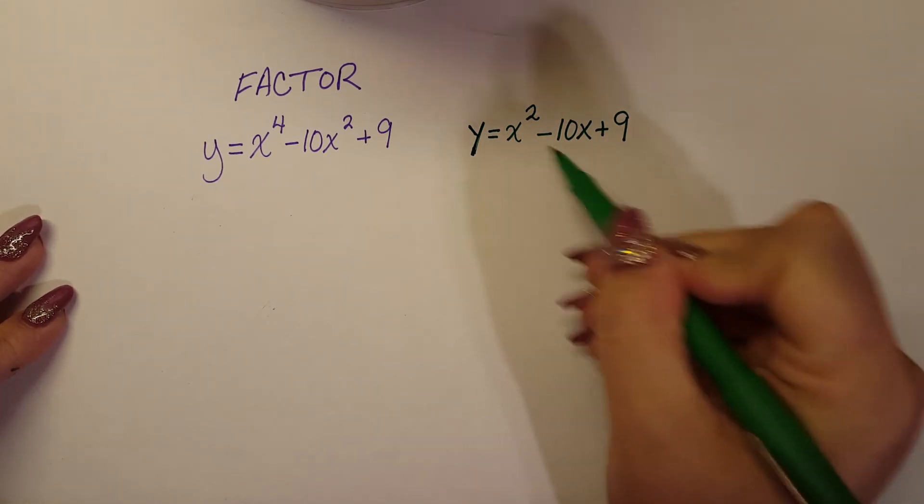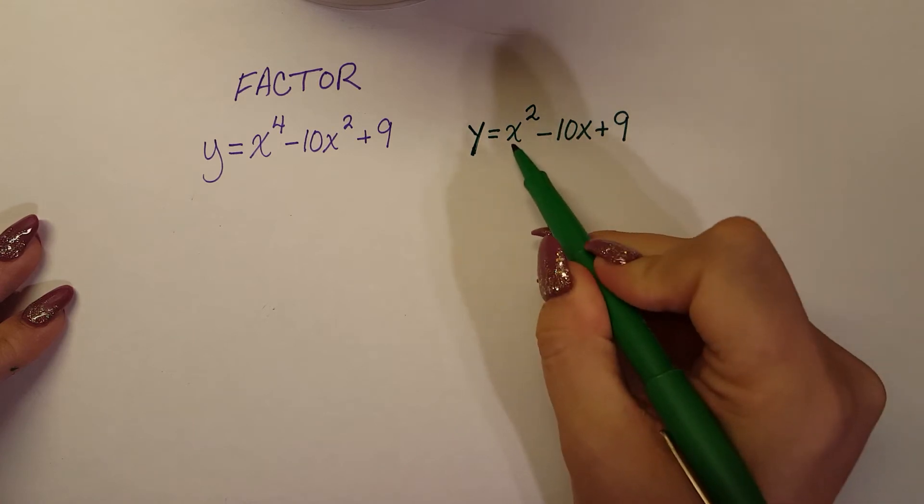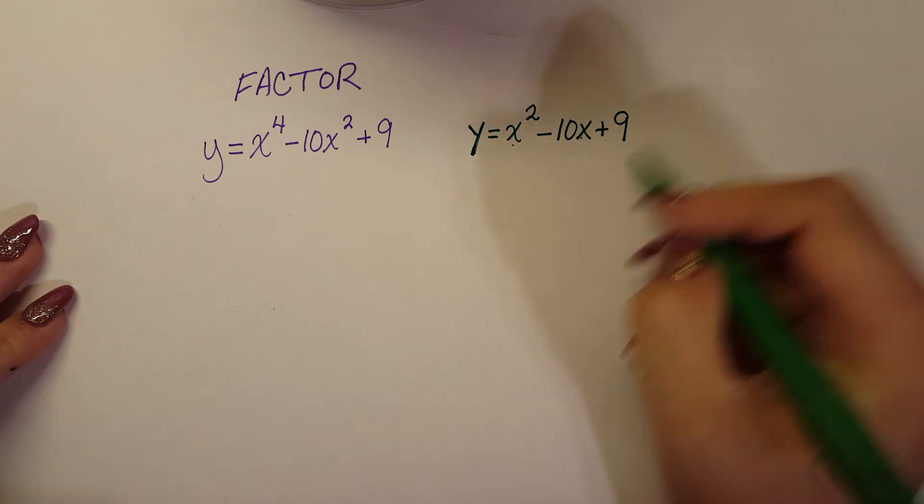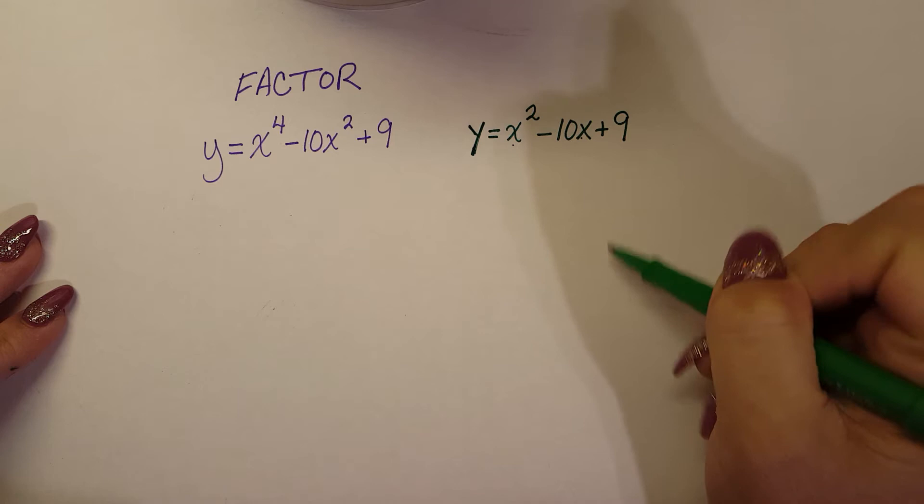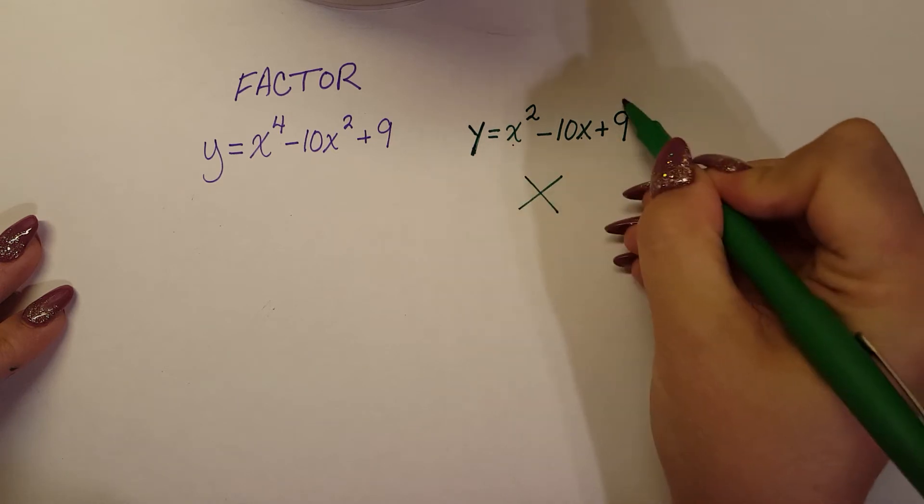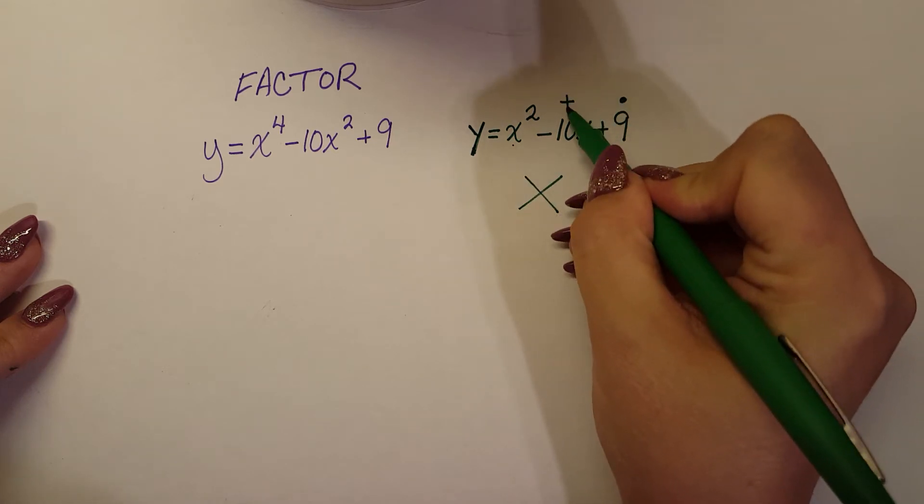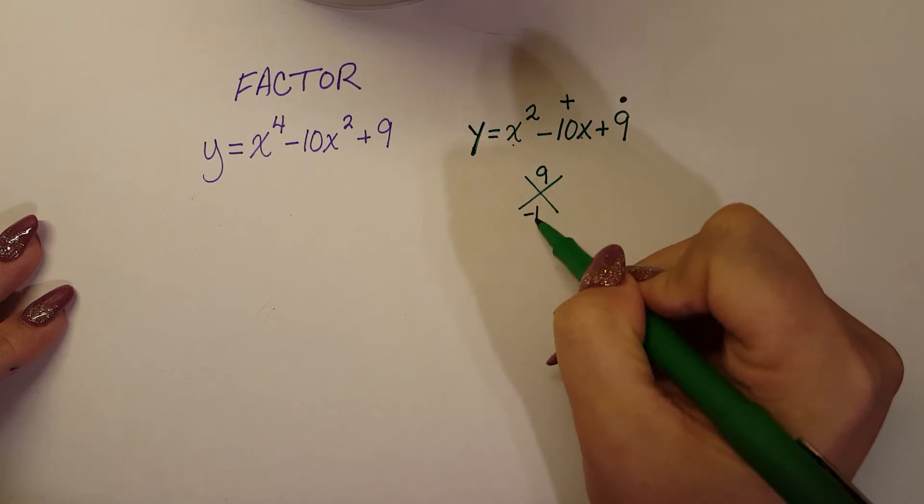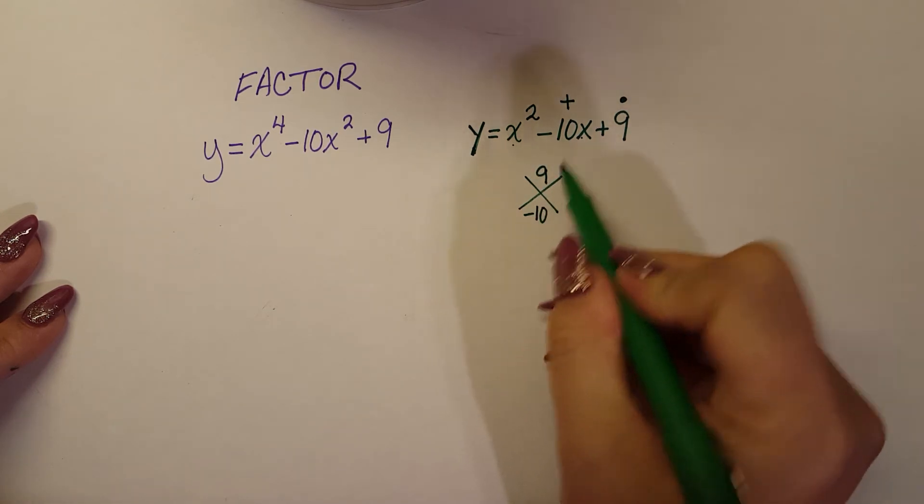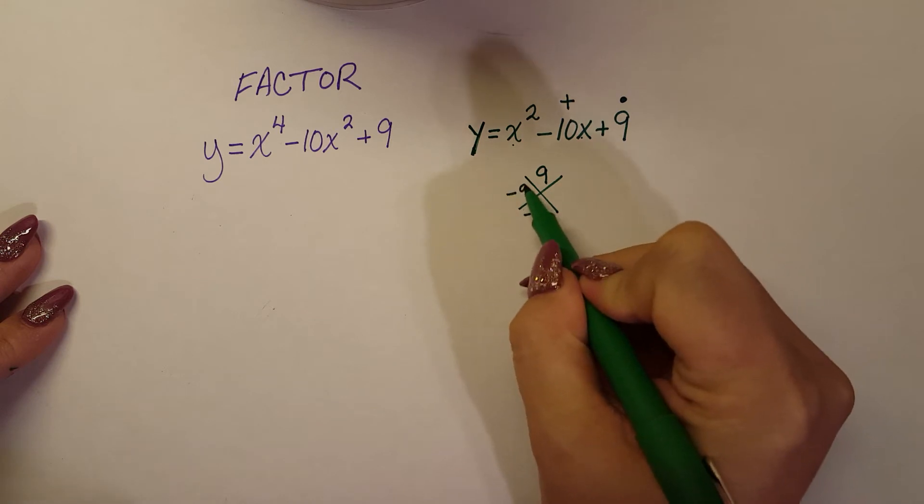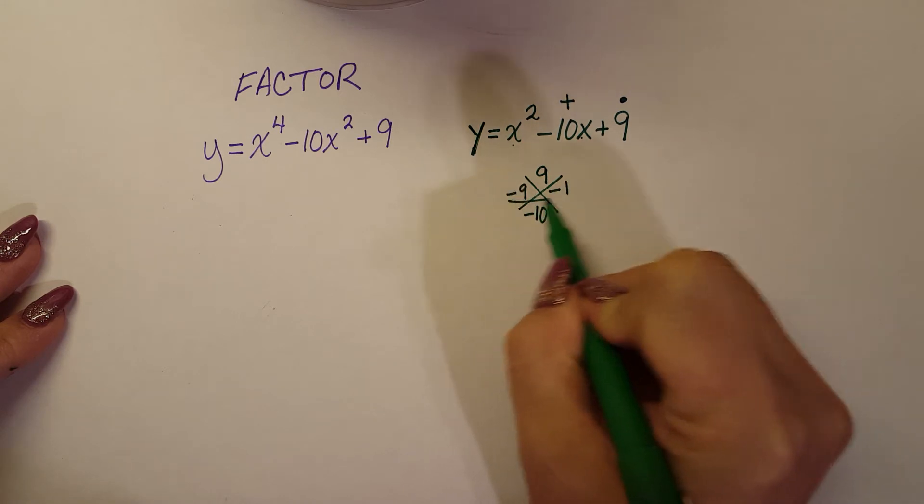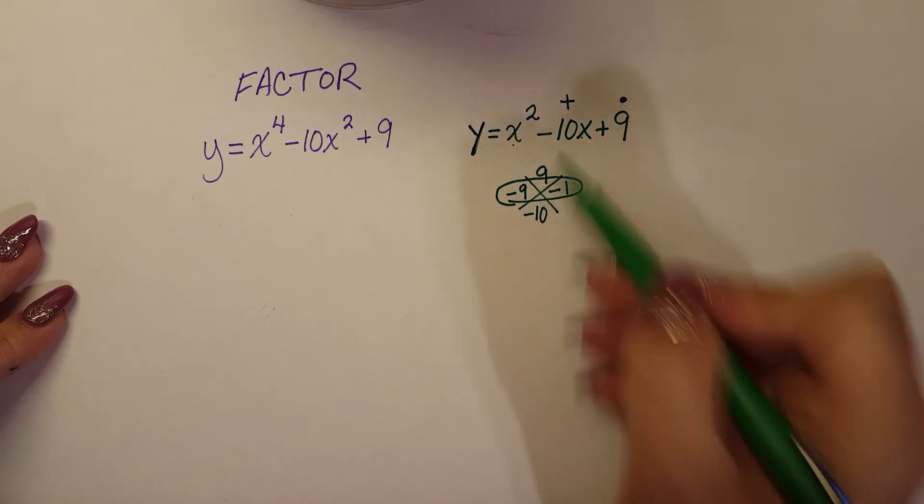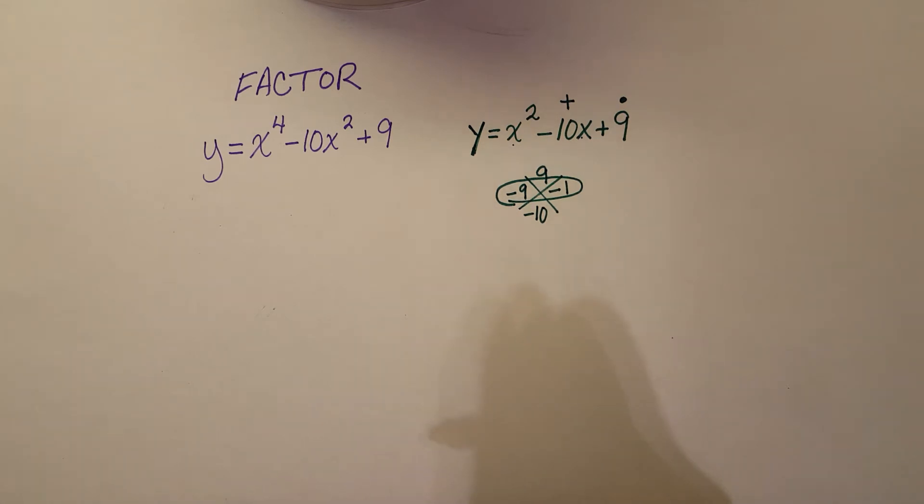Basically I'm using a method of factoring trinomials. I teach my students the X method. What multiplies to 9 and adds to negative 10? So I would go ahead and put the 9 on top, the negative 10 at the bottom. Well, in order to add to a negative 10, we need negative 9 and negative 1. These are the factors that work for this trinomial.